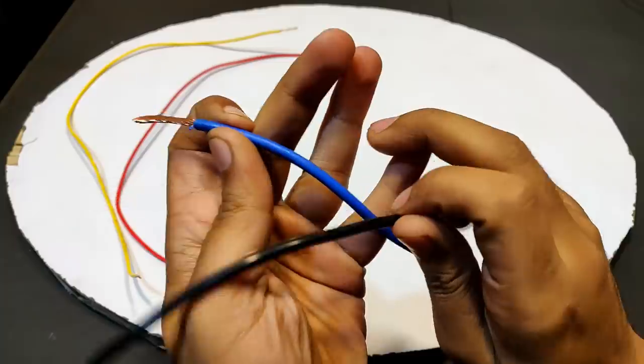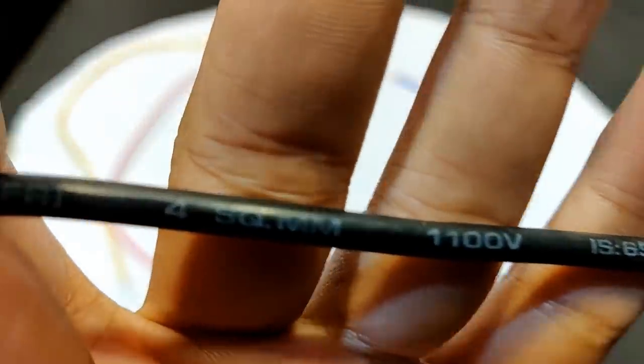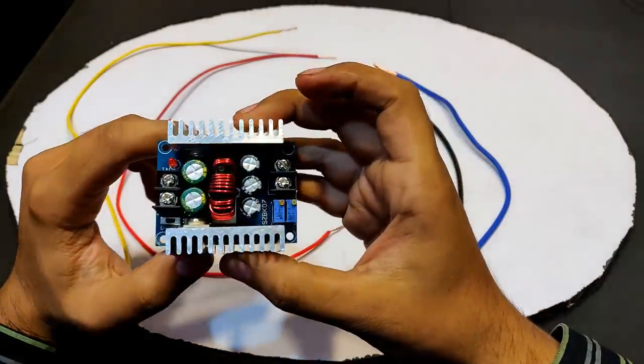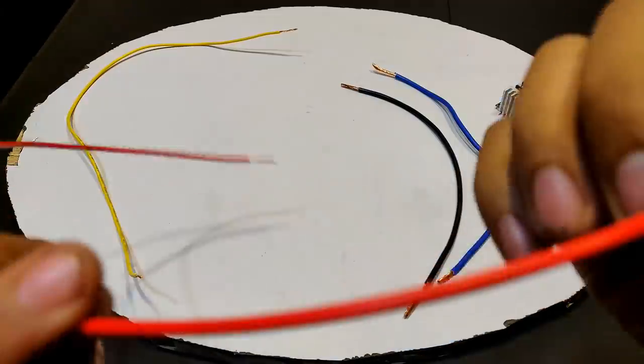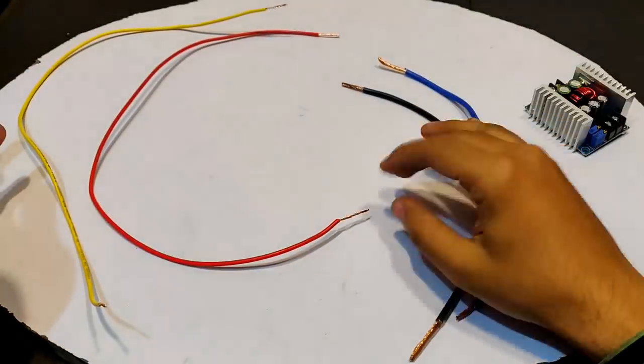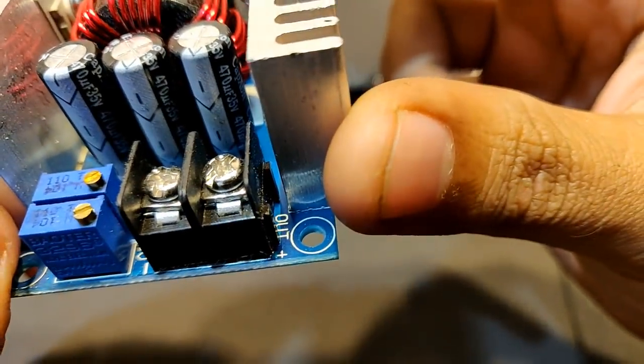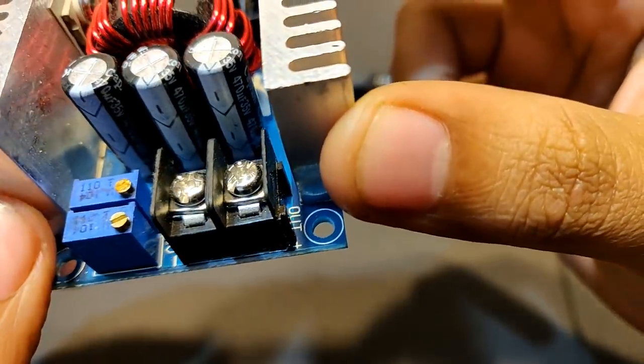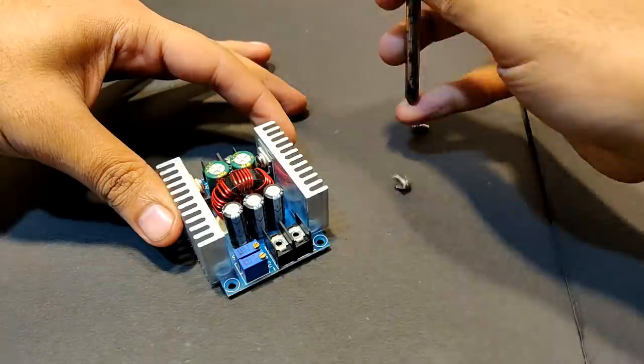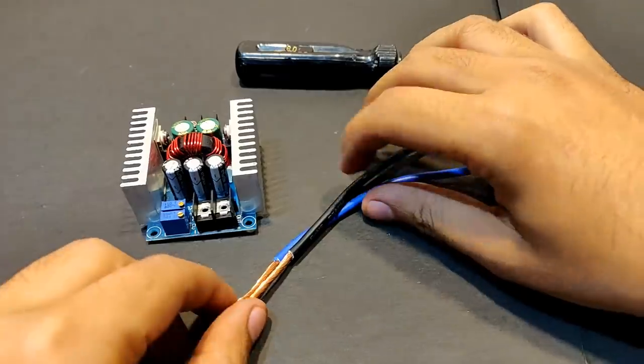So guys, these two are 4mm wires, really thick for carrying high current. This will be connected to the output of this buck converter. And to the input I am using this 1mm wire because at the input the voltage will be higher and current will be lower. And at the output the current will be high and voltage will be lower. So this is the output side, let's connect the output cables first. Black negative, blue positive.